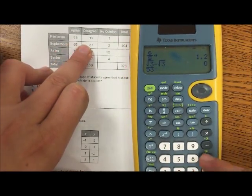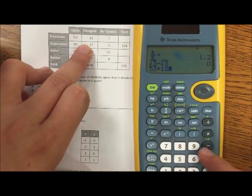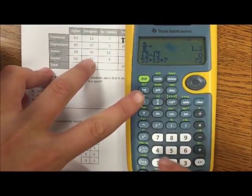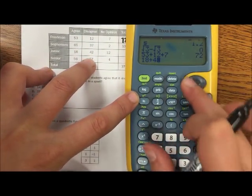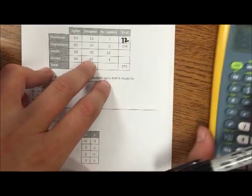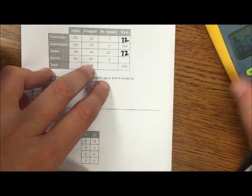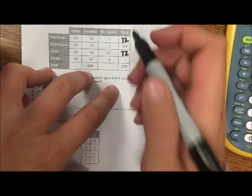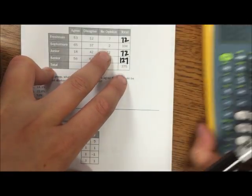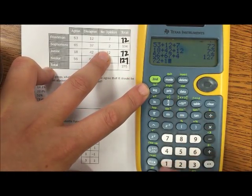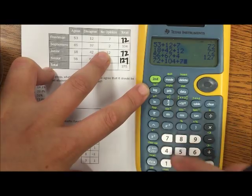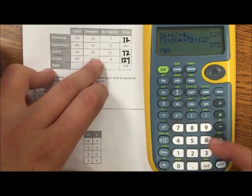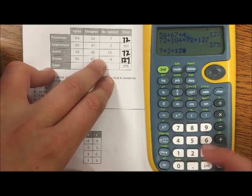So 53 plus 12 plus 7 would give me 72. 18 plus 42 plus 12 would give me 72. 56 plus 67 plus 4 would give me 127. And let's make sure that this is 325.